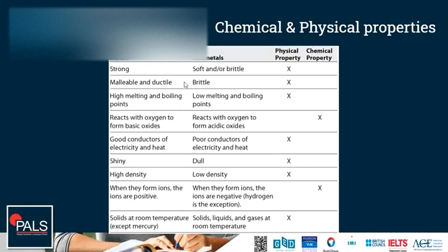Metals usually have high melting and boiling points. They are solids at room temperature — we need to heat them up a lot until they melt — whereas non-metals usually have low melting and boiling points, and many of them are gases at room temperature. Metals react with oxygen to form basic oxides, for example magnesium oxide or sodium oxide, whereas non-metals react with oxygen to form acidic oxides like sulfur dioxide, the oxides of nitrogen, or carbon dioxide. All these oxides of non-metals can react with water to form acids: sulfur dioxide forms sulfuric acid, nitrogen oxides form nitric acid, and carbon dioxide forms carbonic acid.